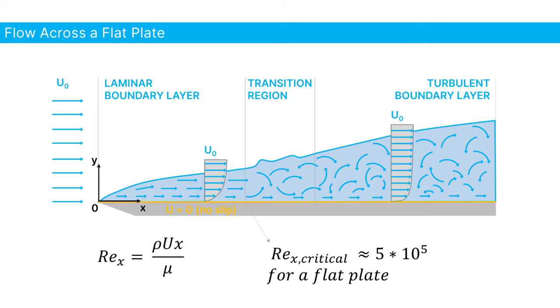When the Reynolds number crosses a critical value, which can be different for any application or geometry, the laminar boundary layer will transition into a turbulent one.